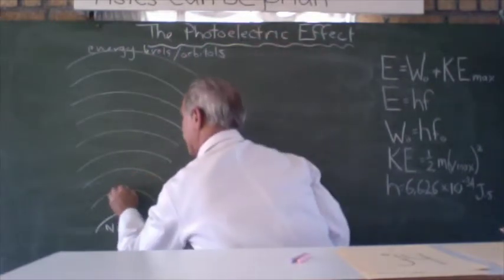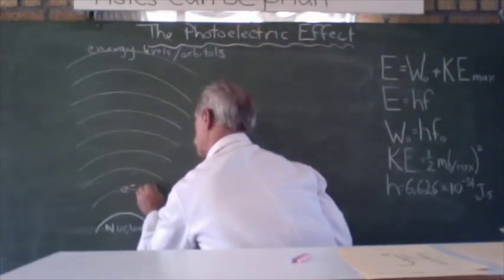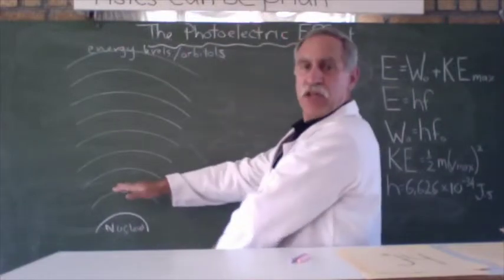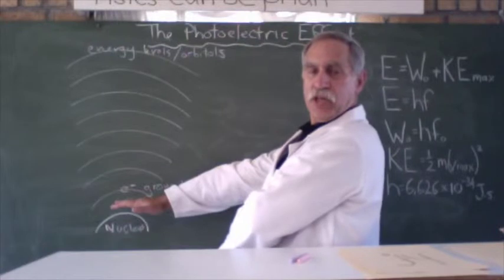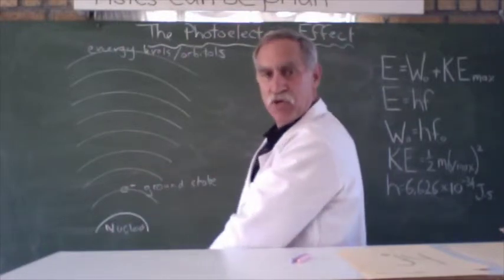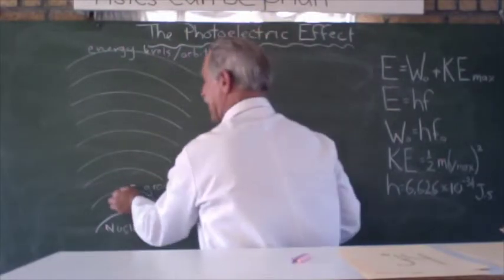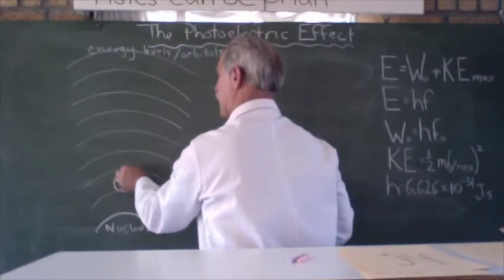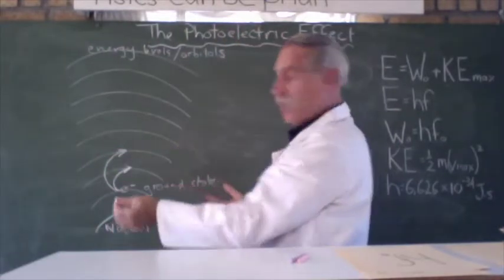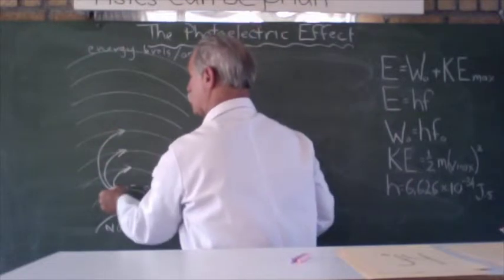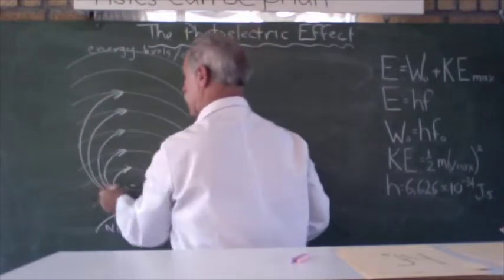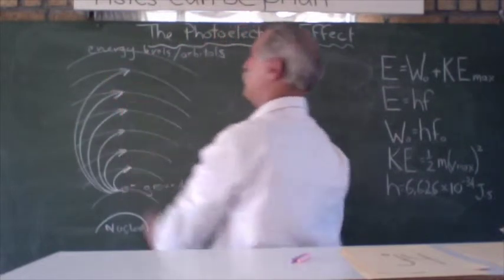Now let's suppose we have an electron in what we call its ground state — an electron sitting as close to the nucleus as possible, with the least amount of energy. Now we give it energy, let's say in the form of heat. The electron can be excited to a higher energy level depending on how much energy we give it, and as we give it more energy, the electron will be excited to higher and higher energy levels.